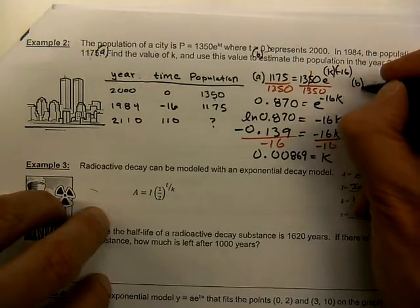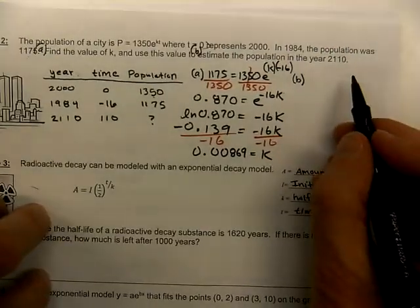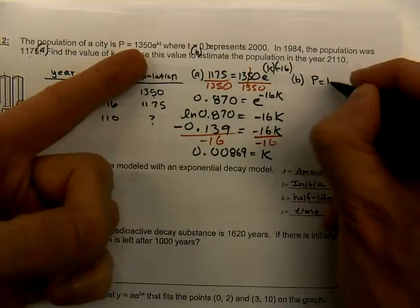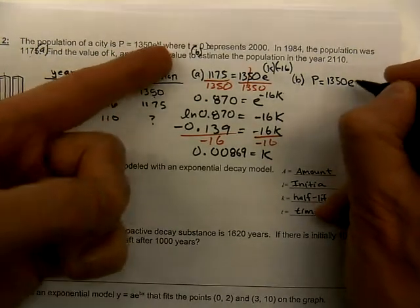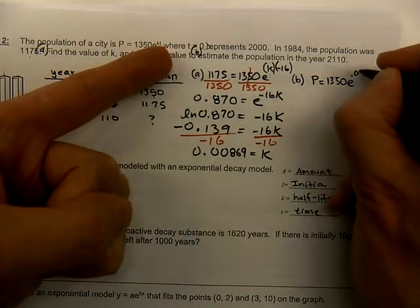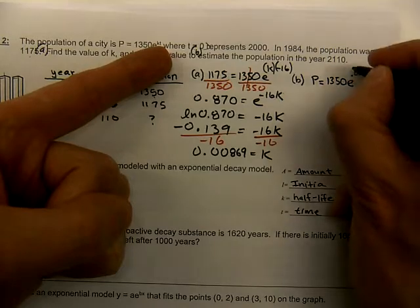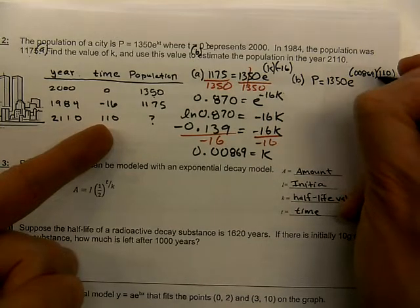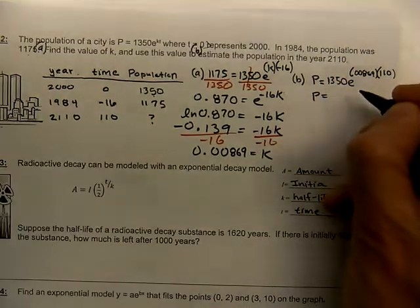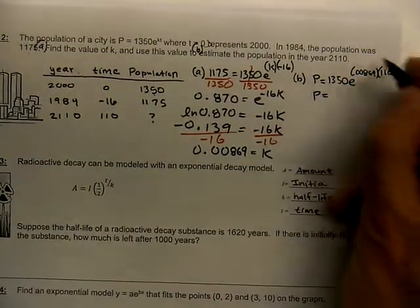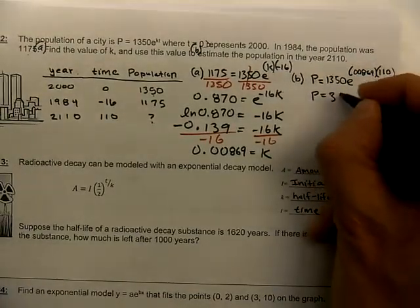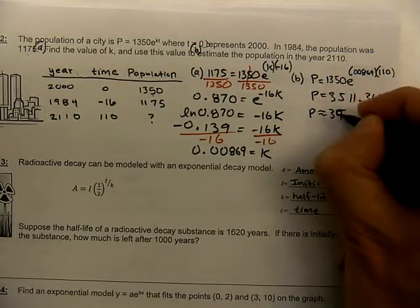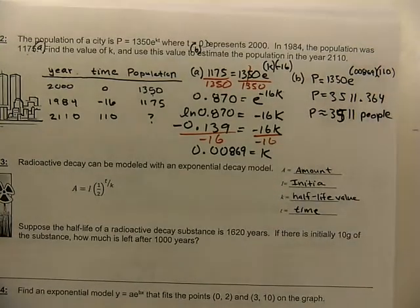Now that we have the rate of growth, we can answer the question, how many people are there in this future time frame? So P is what I want to figure out. How many people are there? There's the formula with the 1350. There's the e to the power of rate times time. So the rate is this decimal that we just got, the 0.00869. And that's being multiplied by the time. So in the future, we'll use the 110 for my time. And notice my variable is by itself. So I don't have to manipulate anything. I don't have to turn it into a logarithm or anything like that. Just type all of that into your calculator. And that will give you 3511.364. So about 3511 people.